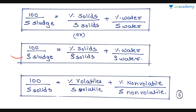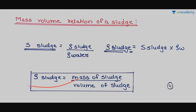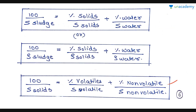Since solids consist of volatile and non-volatile fractions, the specific gravity of solids is: 100 / S_solids = (% volatile solids / S_volatile) + (% non-volatile solids / S_non-volatile). These three relations are important. Based on these, we will solve one example for better understanding. Please note down all the formulas in sequence as given in the slides.